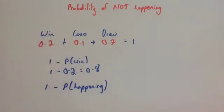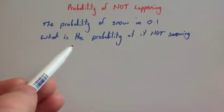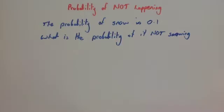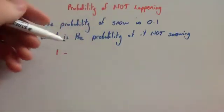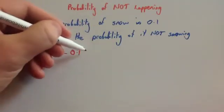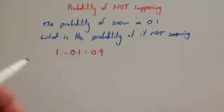Let's have a look at some examples. The probability of snow tomorrow is 0.1. What is the probability of it not snowing tomorrow? So, the chance of it snowing is 0.1. So to get the probability of not snowing, you're going to do 1 take away the probability of snow, which is 0.1, and 1 take away 0.1 is 0.9. So the probability of not snowing would be 0.9.